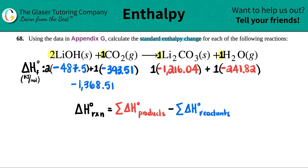Now for the product side: negative 1,216.04 plus negative 241.82, which gives a total of negative 1,457.86.